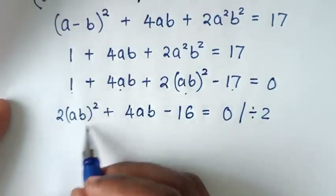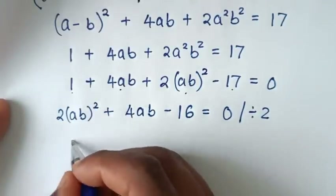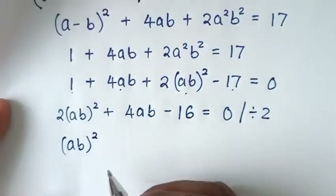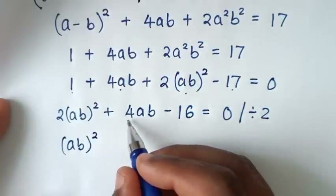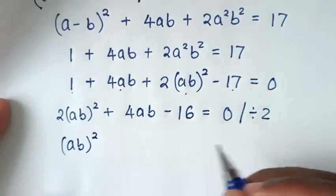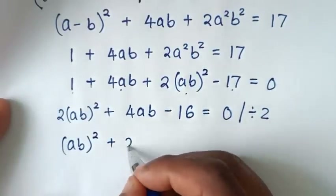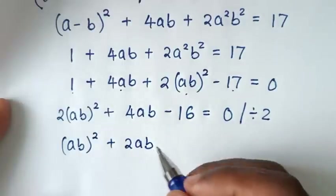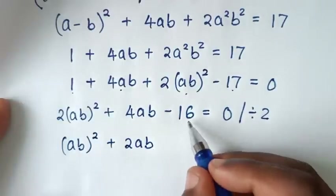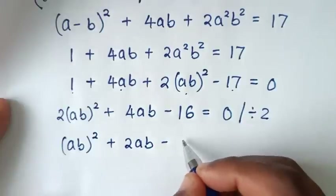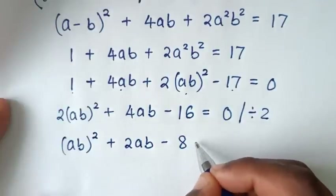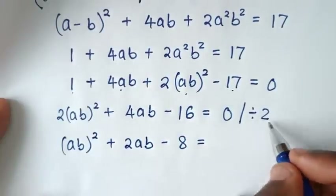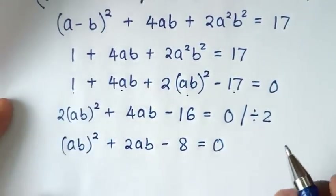2 divided by 2 is 1, so 1 times (ab)² plus 4ab divided by 2 is +2ab, then -16 divided by 2 is -8, equals 0. So: (ab)² + 2ab - 8 = 0.